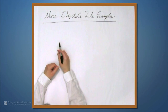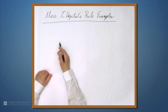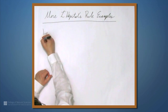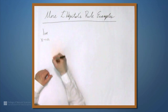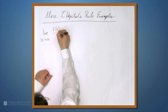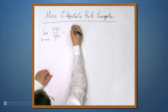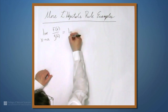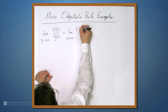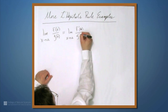We're here at the example table, and in this video we're going to look at some more L'Hôpital's rule examples. Let's just remind ourselves of what L'Hôpital's rule says. We have the limit as x approaches a of f over g, and this is equal to the limit as x approaches a of f' over g'.